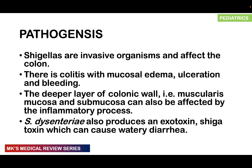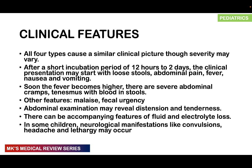Ulceration and ultimately bleeding can occur. The deeper layers of the colonic wall, such as the muscularis mucosa and even the submucosa, can sometimes be affected in the inflammatory process. Shigella dysenteriae also produces an exotoxin known as Shiga toxin, which may cause watery diarrhea.